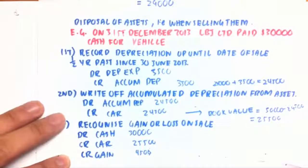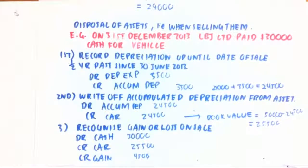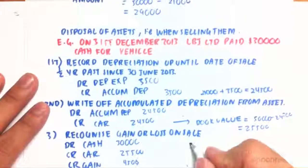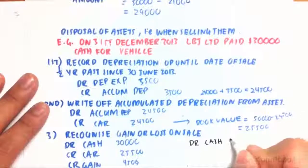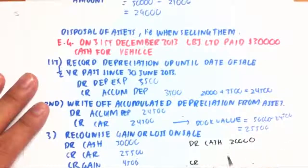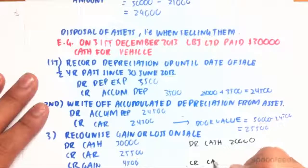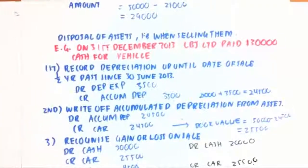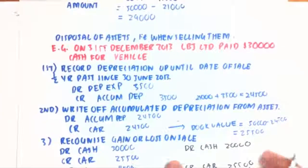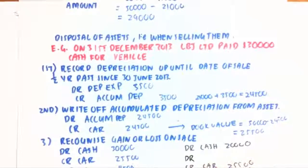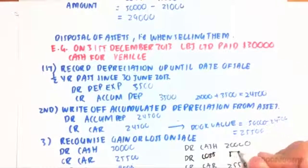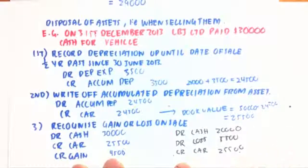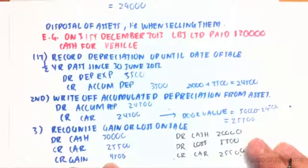On the other hand, if the vehicle sold for $20,000, keeping the same book value of $25,500, we would debit cash $20,000 and credit the car $25,500. Since debits must equal credits, we debit the loss account for $5,500. That's a loss of $5,500 because they only paid $20,000 while the book value to us is $25,500.